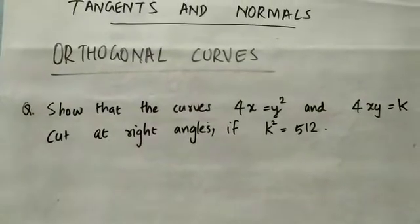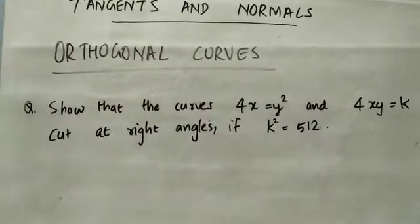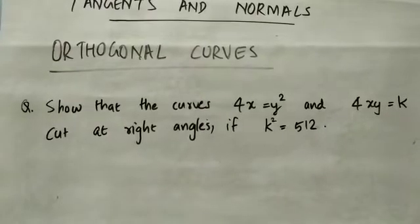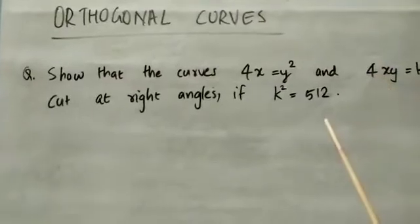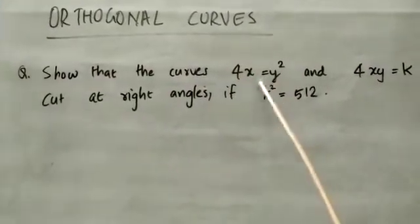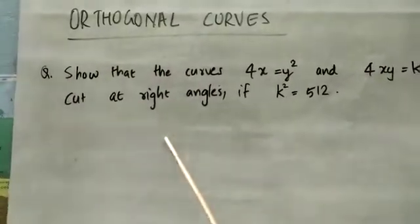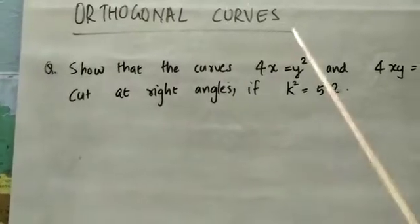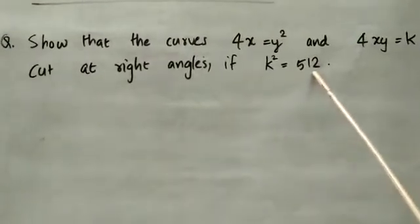We have an example: show that the curves 4x = y² and 4xy = k cut at right angles if k² = 512. We will prove this — we will not simply use the curves' tangents to cut at right angles, but actually prove that they cut at right angles and that k² = 512.